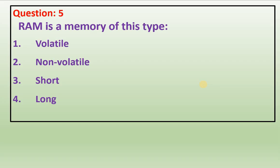Question 5: RAM is a memory of this type. RAM stands for Random Access Memory, also known as primary memory or main memory. The CPU takes data from RAM. In the answer key the answer is given as short, but that is wrong.